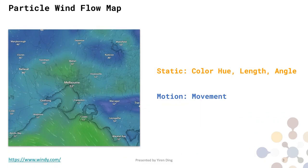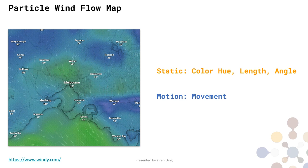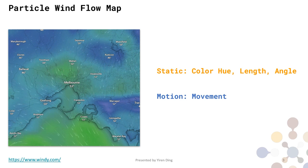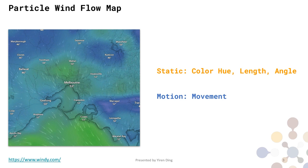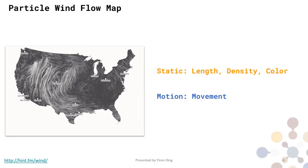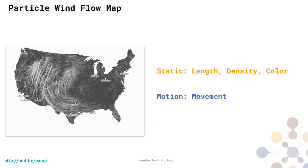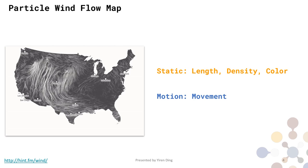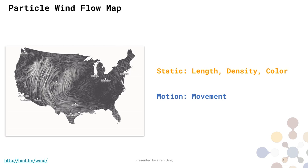However, particle wind flow map is different. In this example, it not only uses color hue, length, and angle as encoding channels to encode wind data, but also uses movement as a main channel to encode wind speed. Here is another example from HintFM. It has a minimal design style to visualize wind data by using both static channels and motion channel.